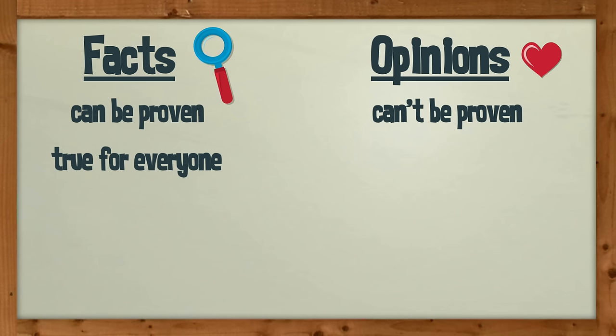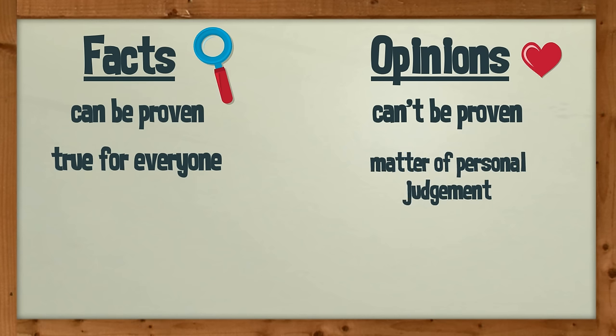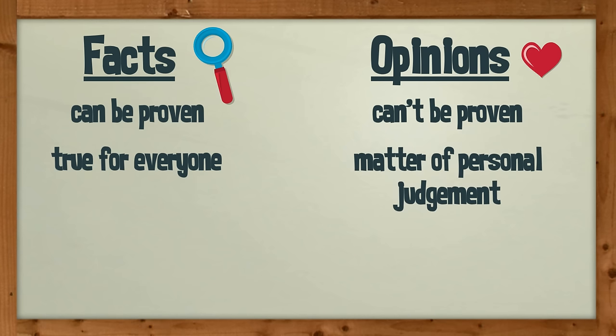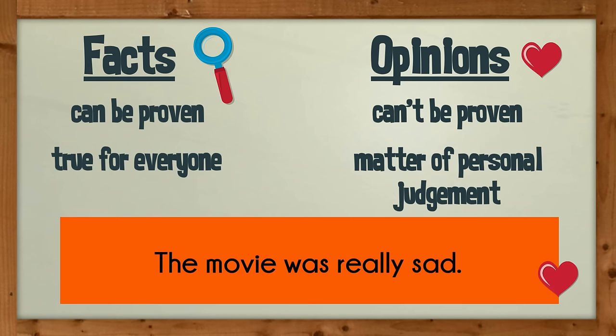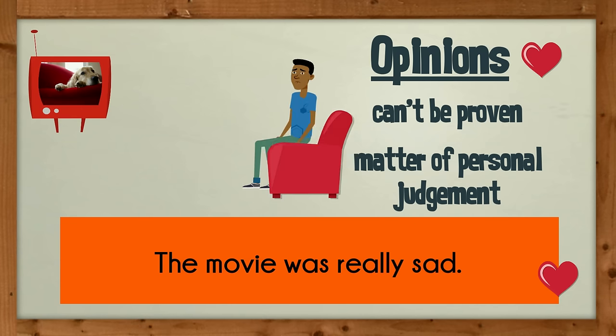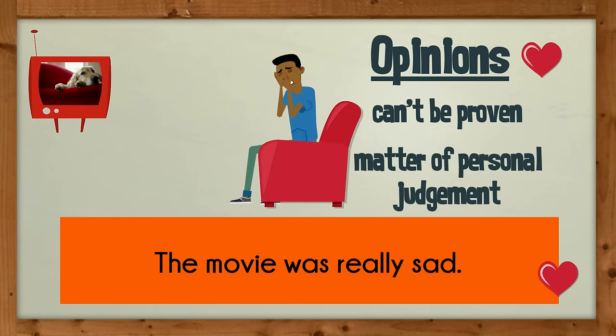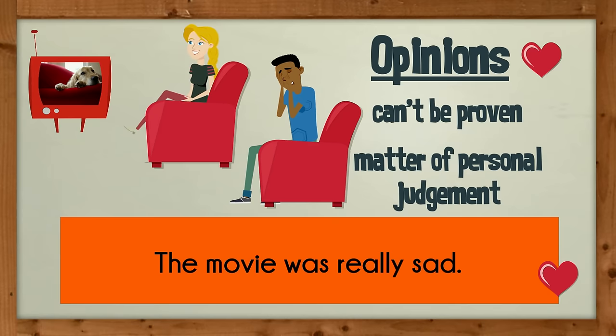Opinions can't be proven because they're a matter of personal belief or judgment. They're not true for everyone — they differ from person to person. Here's an opinion: the movie was really sad. This is an opinion because it cannot be proven. You might agree with this or you might not, but it won't be true for everyone.